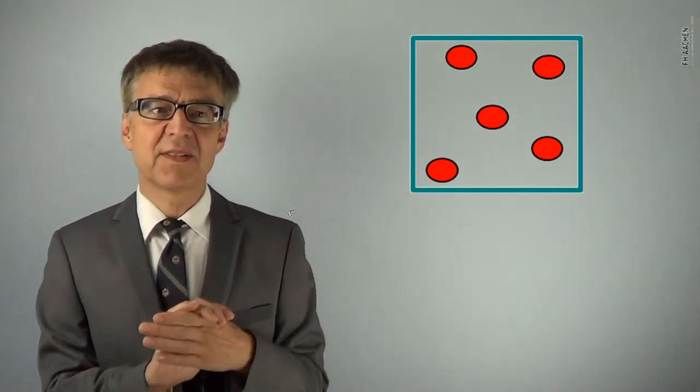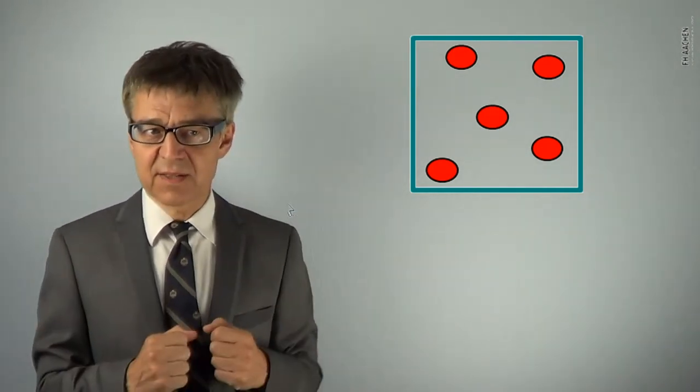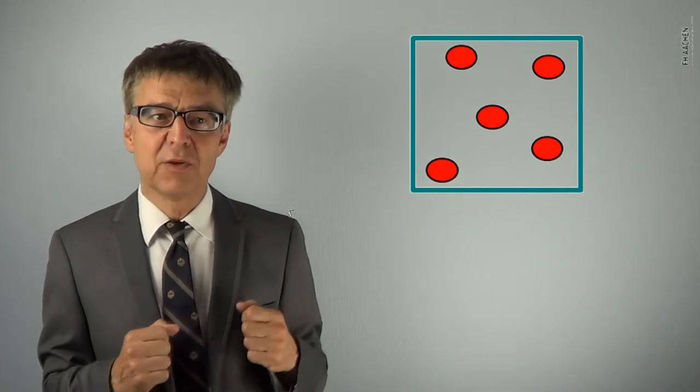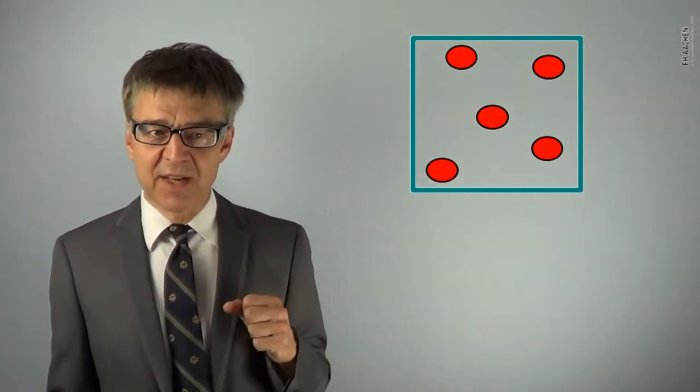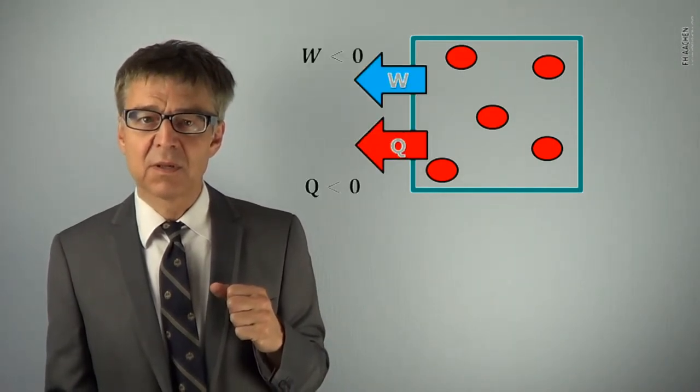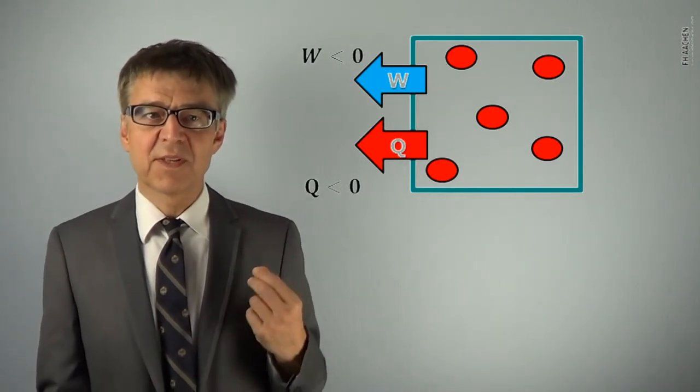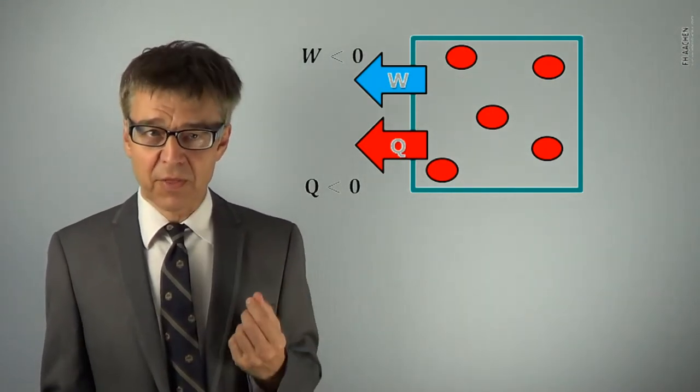Conversely, if a process is associated with the output of work or heat, if the system expands against an external pressure, or if it loses heat to the surroundings, we are dealing with negative signs of W and Q. If Q is less than zero, the process is referred to as an exothermic one.